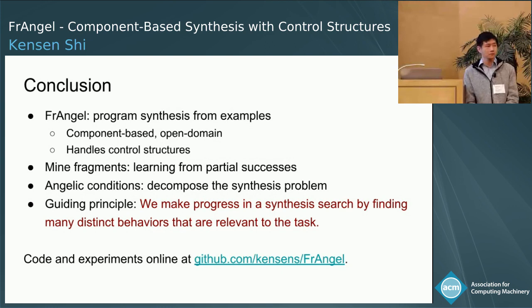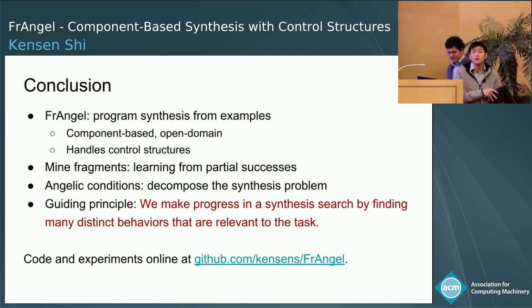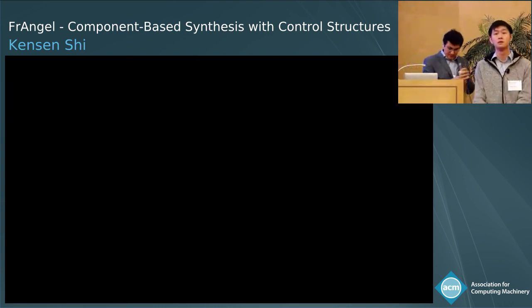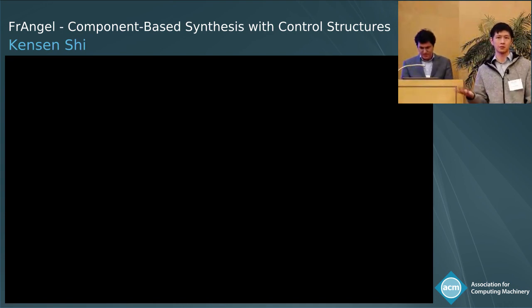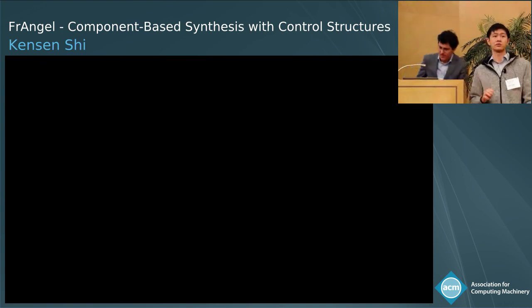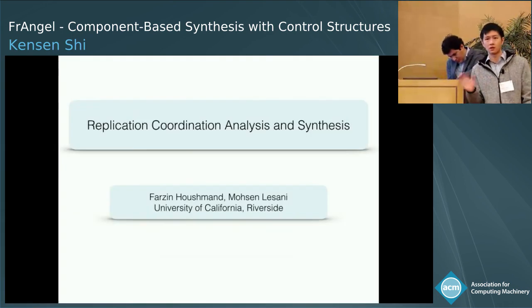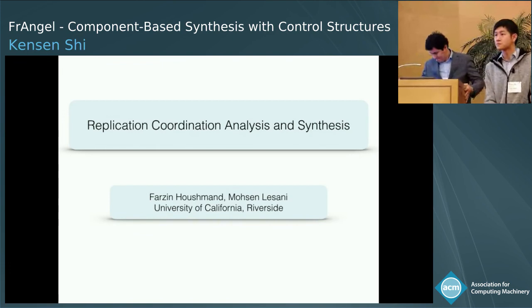One more question: with double precision examples, how do you handle the fact that computing things in slightly different orders gives small deviations in precision? Our synthesizer is set up so that it can accept arbitrary ways of comparing different objects. So if you say, given two doubles, I want to compare them with some epsilon, then it will work.